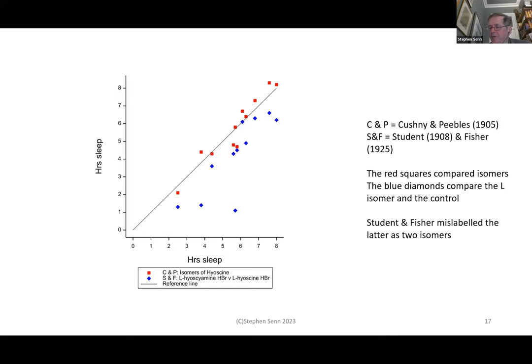This is very humbling for any statistician. The pharmacologists — the life scientists — with no benefit of modern statistics, came to the right conclusion. But Student, a pioneer of modern statistics, and R.A. Fisher, possibly the most important statistician ever, both came to the wrong conclusion because they had the wrong data.